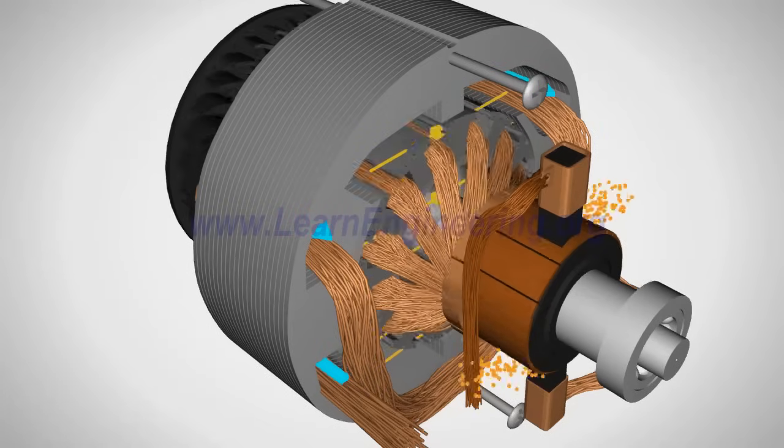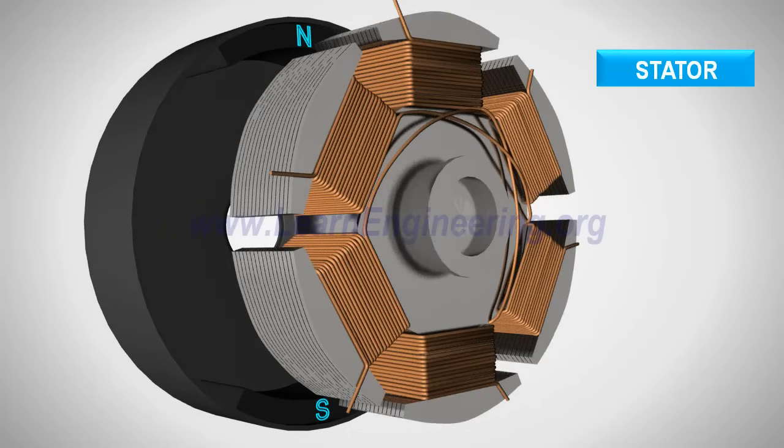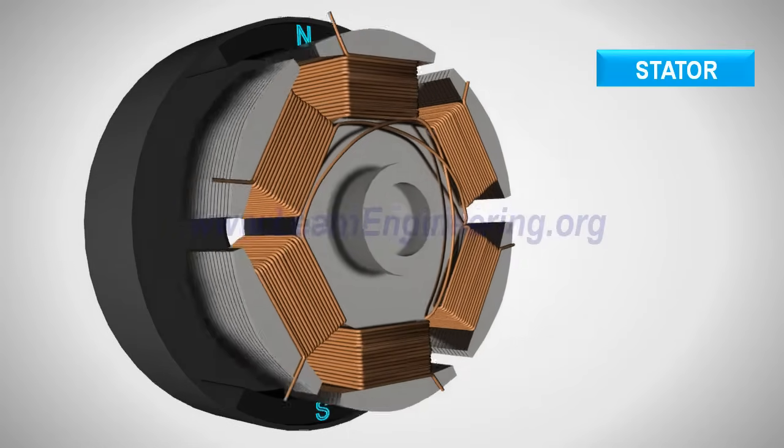Let's see how a brushless DC motor works. The rotor of a BLDC motor is a permanent magnet. The stator has a coil arrangement as shown.